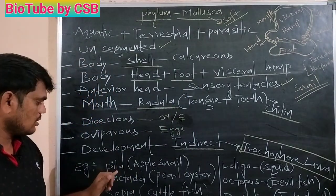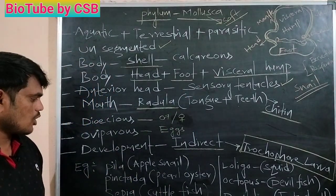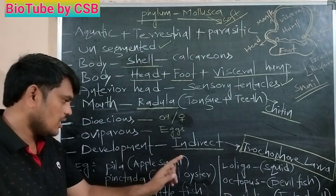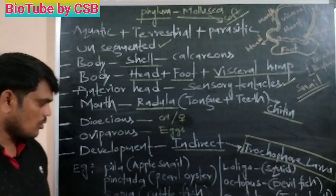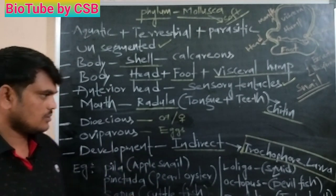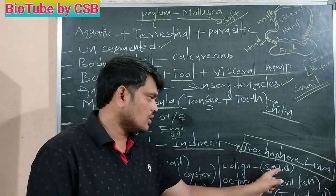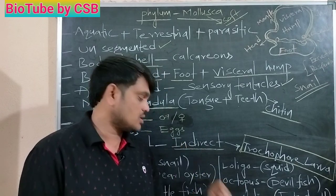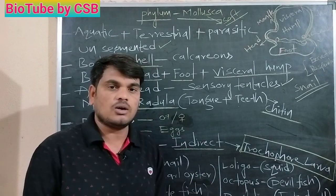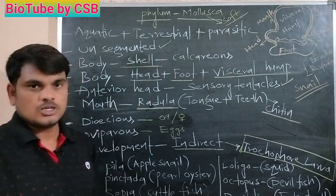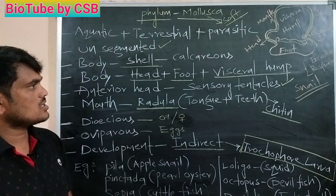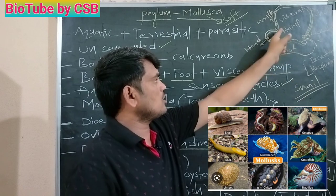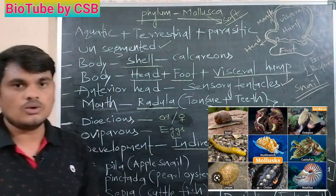Best examples: Pila, commonly called apple snail; Pinctada, commonly called pearl oyster; Sepia, commonly called cuttlefish; Loligo, commonly called squid; Octopus, commonly called devil fish; Dentalium, commonly called tusk shell. The suitable example for phylum Mollusca is Pila globosa. You can observe the diagram on screen.